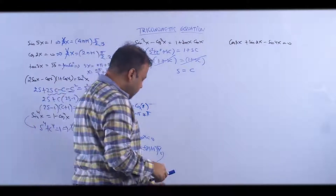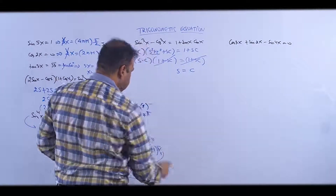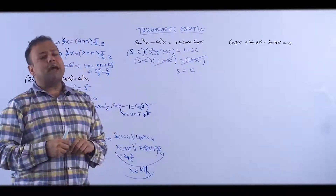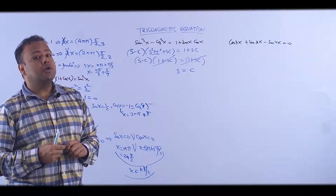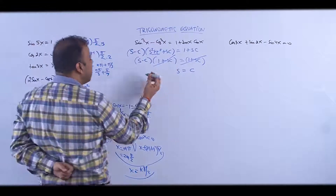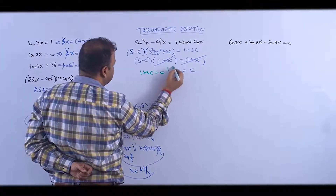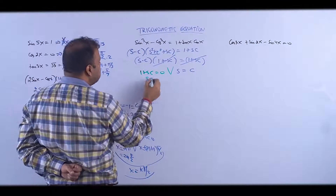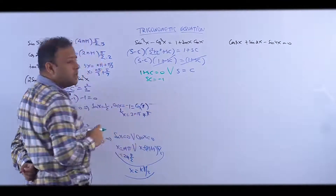Yeh dono cancel ho gaye — sin(x) = cos(x)? But wait, that's wrong to directly conclude. You need one more term: you can't cancel unless the other factor is checked. So you must make the case: 1 + sin(x)cos(x) = 0, or sin(x) = cos(x).